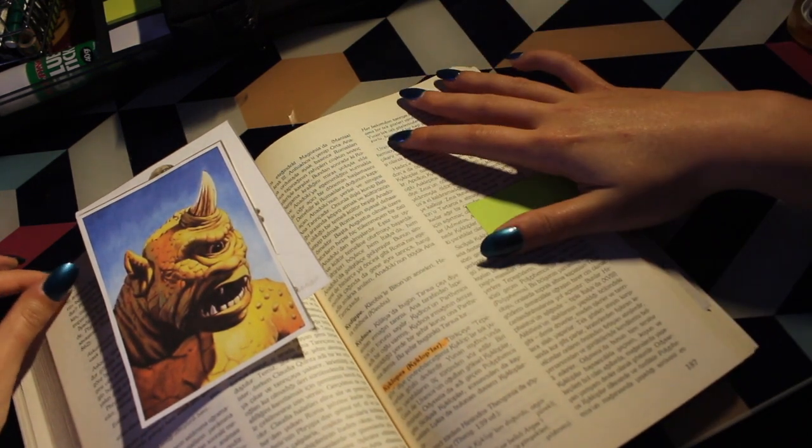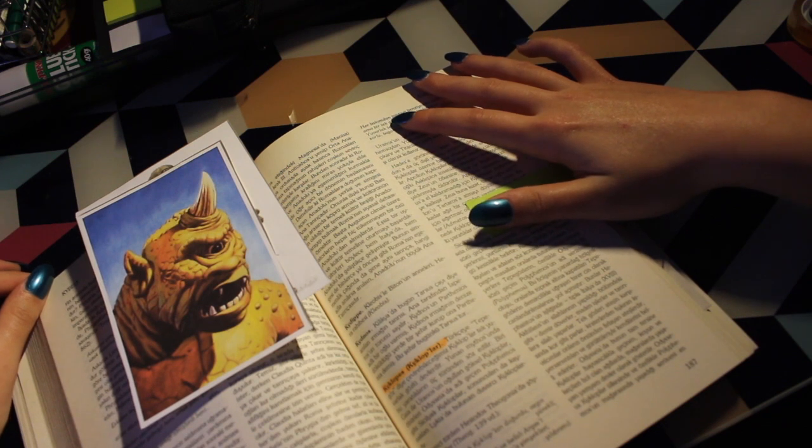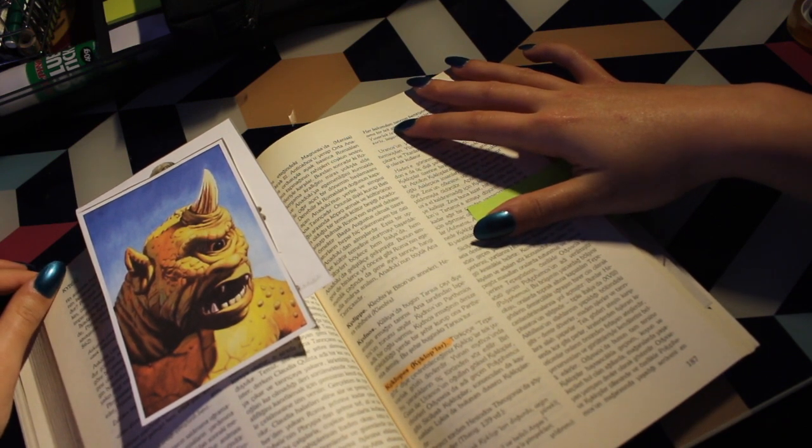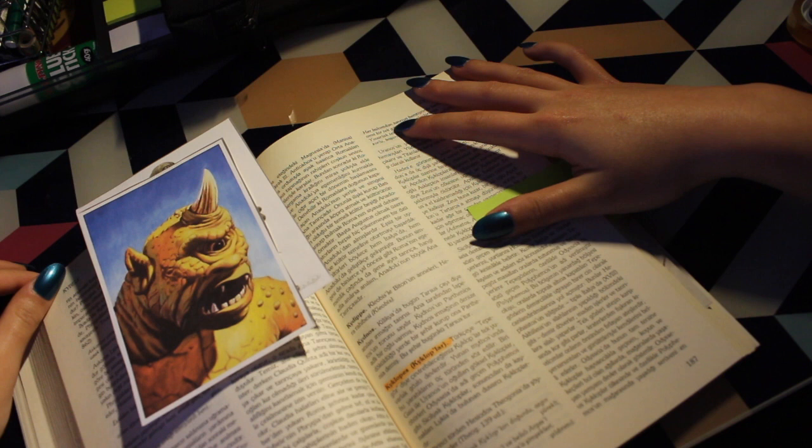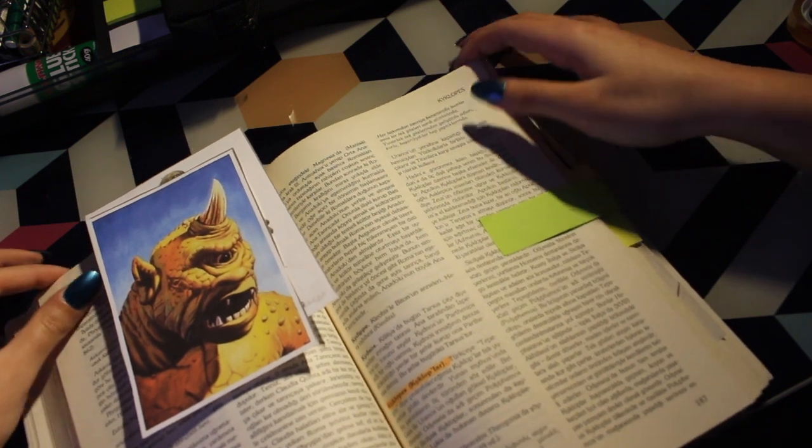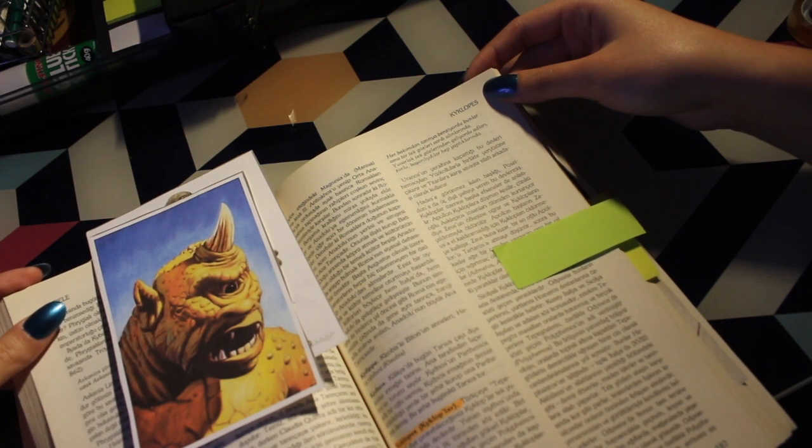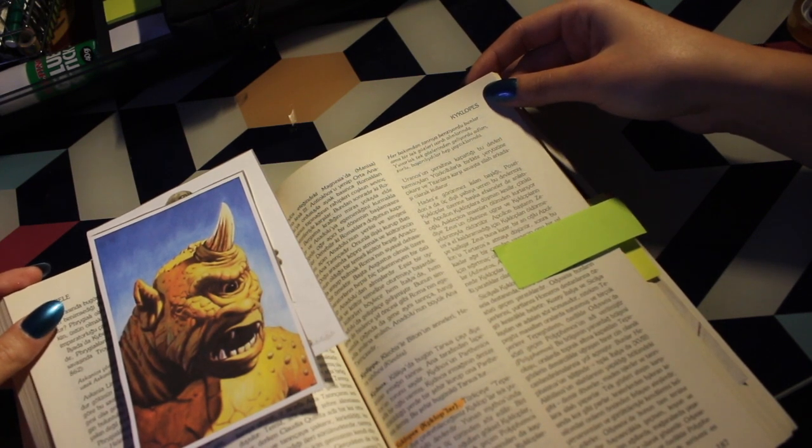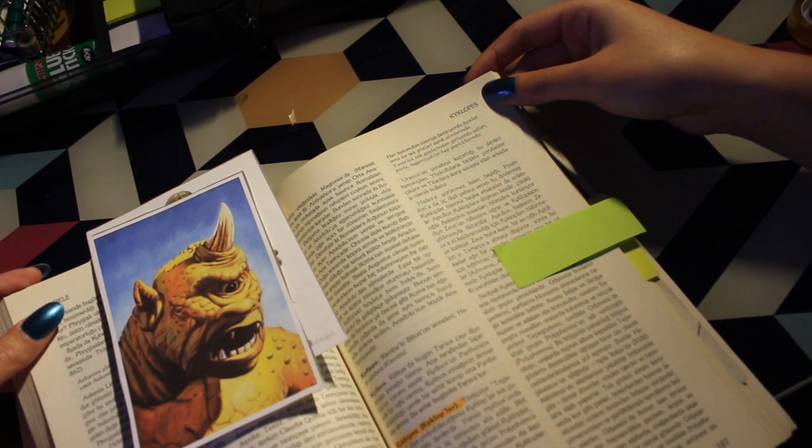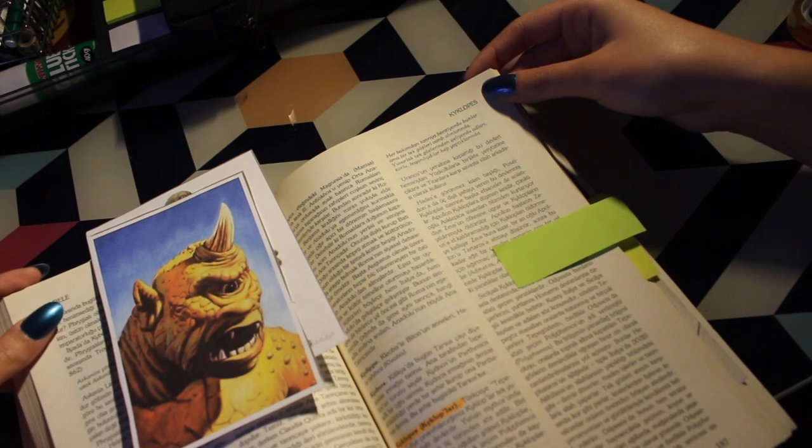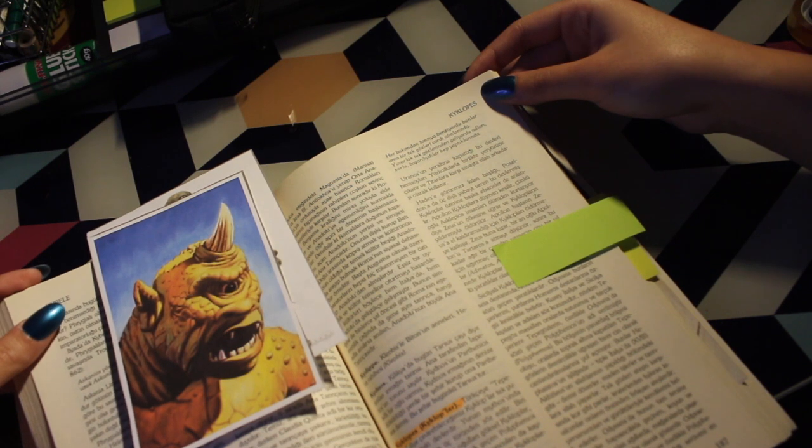Then the earth gave birth to the Cyclops, bold-hearted Brontes, Steropes, and troublesome Arges, who gave Zeus his thunder and lightning. In every way they resembled the gods, but they had one round eye in their foreheads. Their strength came from their single eye, and they were always successful in their work.